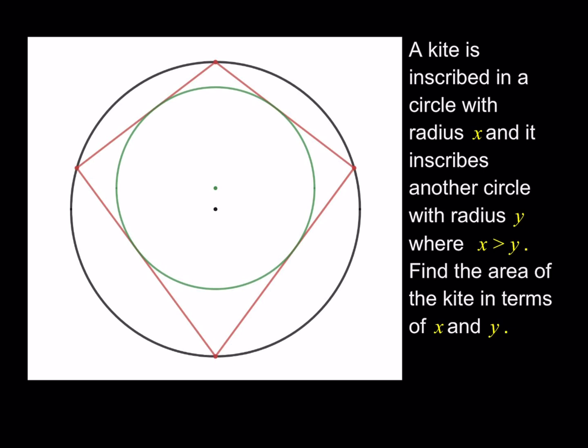We have a kite that is inscribed in a circle with radius x, which is the outside circle, which is the black one, and it inscribes another circle with radius y, which is the green circle, where x is greater than y. Find the area of the kite in terms of x and y. This is kind of like a famous problem, you've probably seen, some of you may have seen it in the literature, but it's kind of interesting, so I just decided to do that.